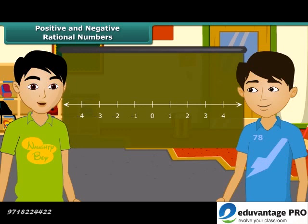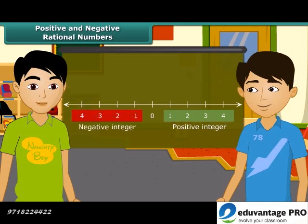How do we represent a rational number on a number line? Look at this number line. Points on the right side of 0 are called positive integers and points on the left side of 0 are called negative integers. Let's mark 1 by 2 on this line — 1 by 2 will lie in between 0 and 1, and minus 1 by 2 will lie in between 0 and minus 1.